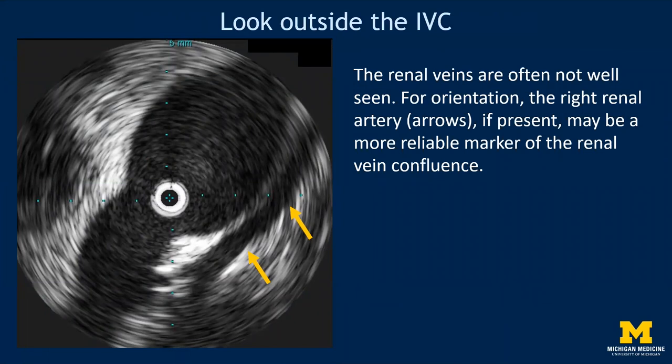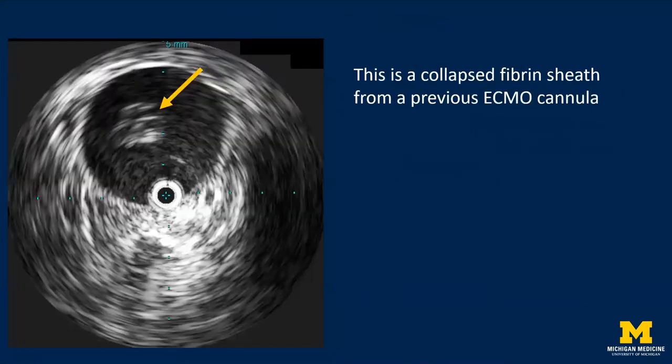As we move caudally, we see the renal vein confluence and, importantly, the right renal artery posterior to the cava. In some patients we may not be able to see the renal vein confluence as clearly, but the right renal artery may be seen even when the renal vein confluence is obscured or difficult to see. When considering placement of an IVC filter, I'll use the right renal artery as a marker to measure where I want to position the apex of the filter — this is a very important landmark. Don't forget to check for intraluminal filling defects, as this may alter your plan. In this patient we see a collapsed fibrin sheath from a previous ECMO cannula, shown here as an echogenic filling defect.